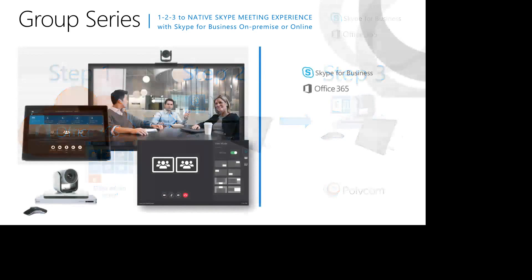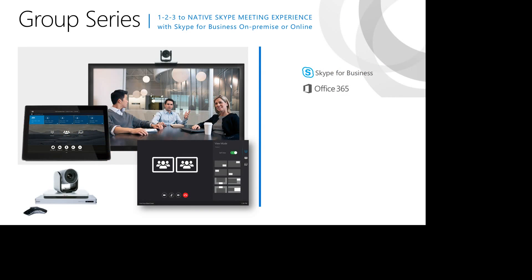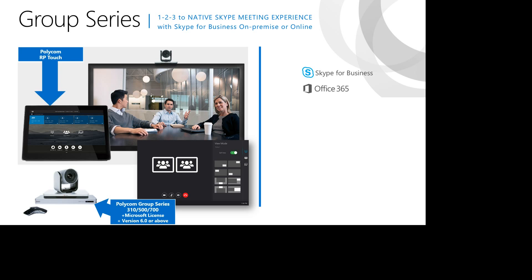What are the requirements? When you start working with Microsoft Office 365, there are some requirements. First, you need to have a Group Series 310, 500, or 700. You need to have a Microsoft license on there — this will enable the registration and the Microsoft codec to be used on the Group Series. Also make sure you are on version 6.0 or above; at the moment we are on 6.0.1, so make sure you are on the latest and you should be fine.